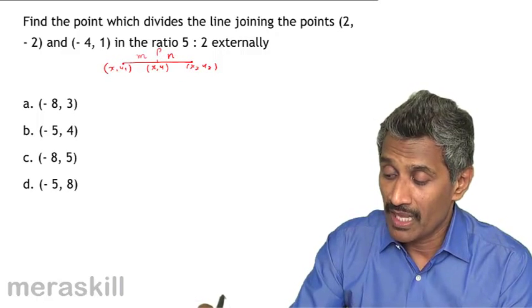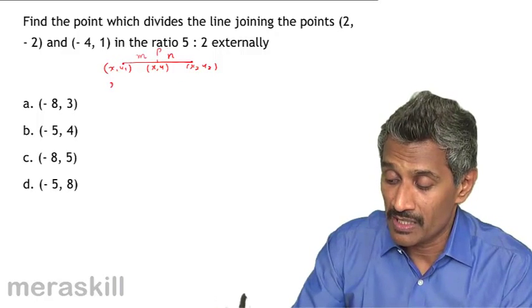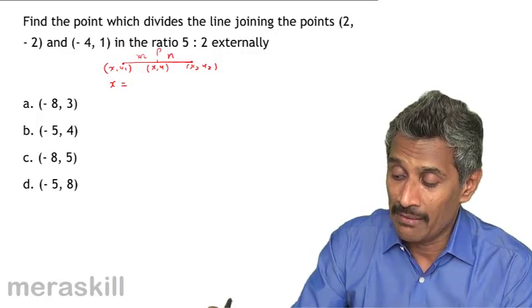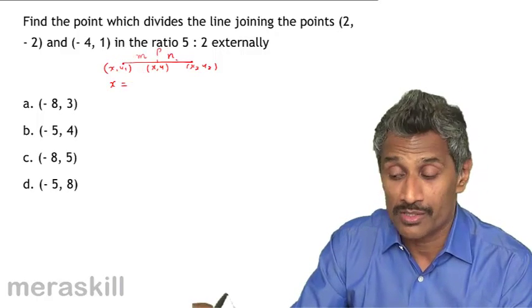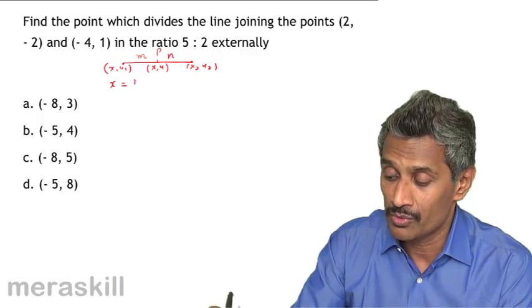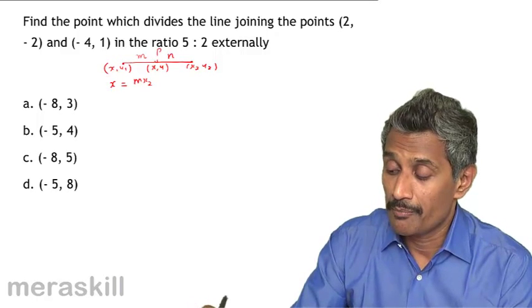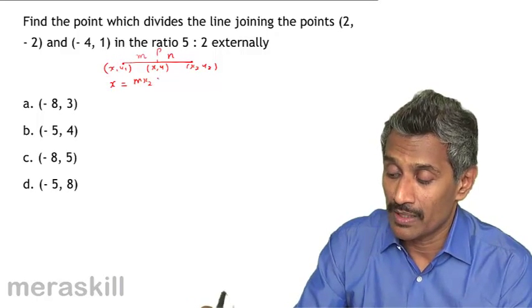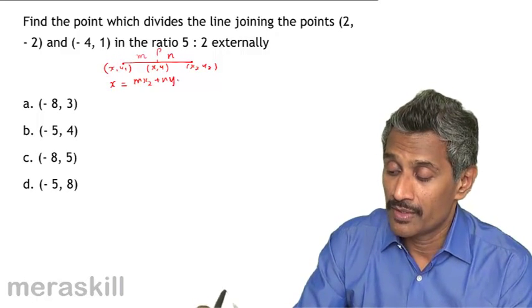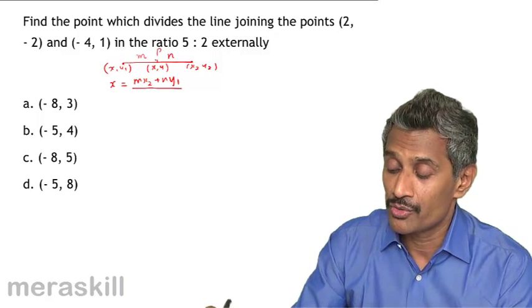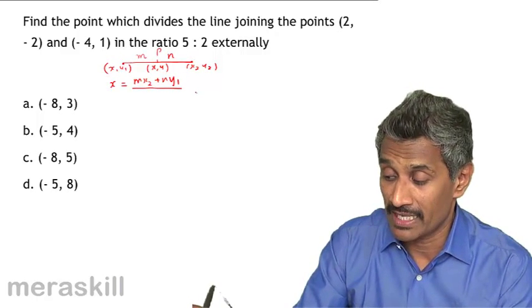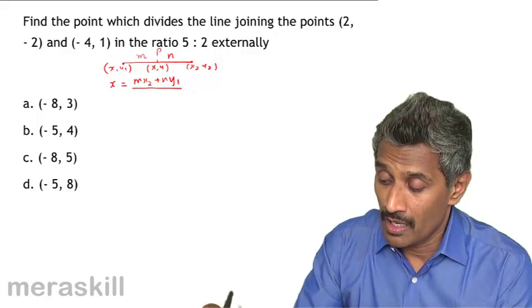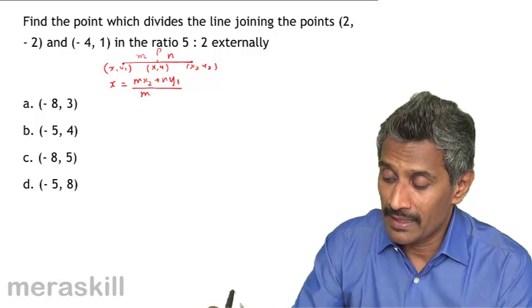In such a case, the x coordinate of P would be given by M into x2—it's just crossing over—M into x2 plus N into x1, upon M plus N. The two components of the ratio are crisscrossed and multiplied by x1 and x2 upon M plus N.